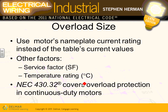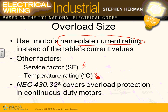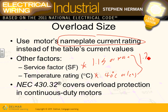When sizing the overload, you use the nameplate full load current — very important. Two factors apply: if the service factor is 1.15 or more, or temperature rise is 40°C or less, use a 1.25 multiplier. For all other cases, use 1.15. This information comes directly from NEC 430.32, and you will be tested on it next week.